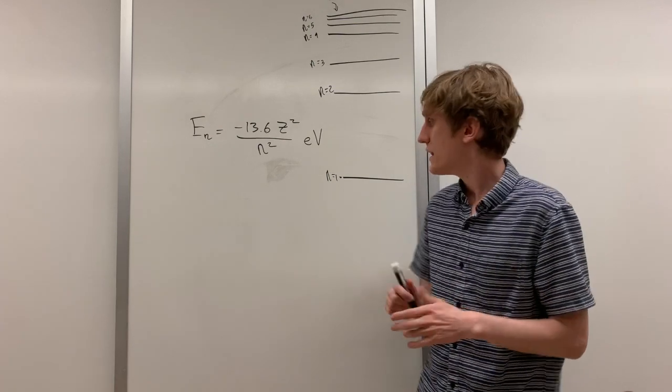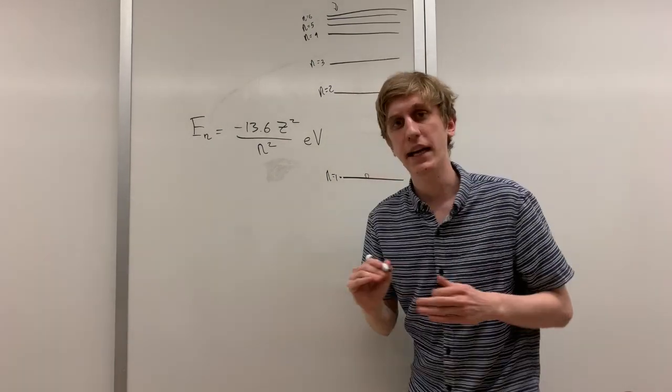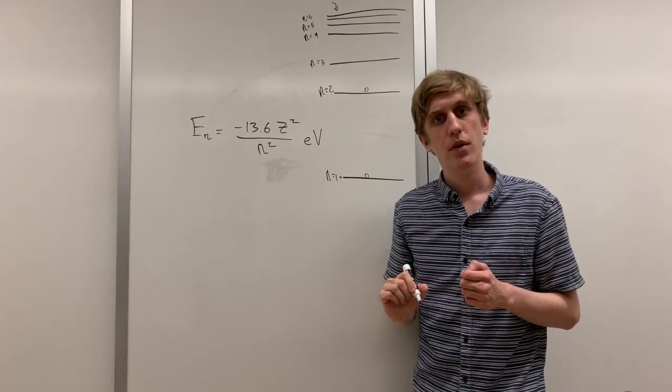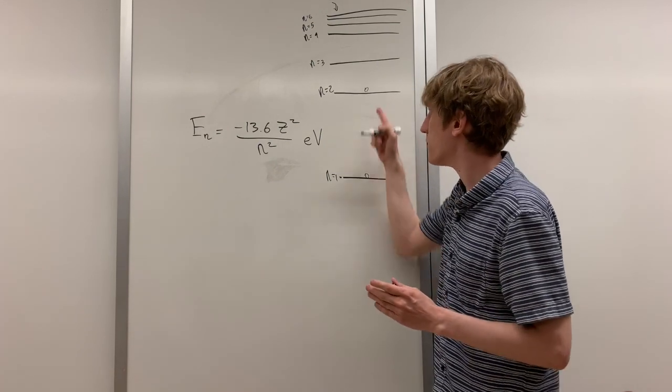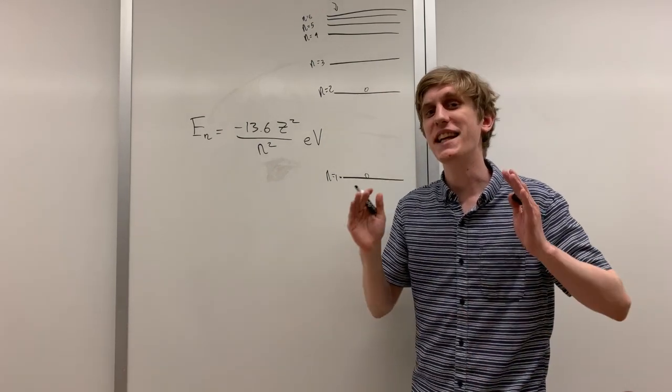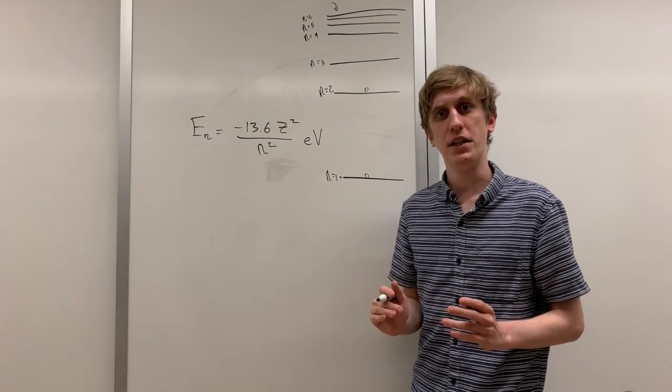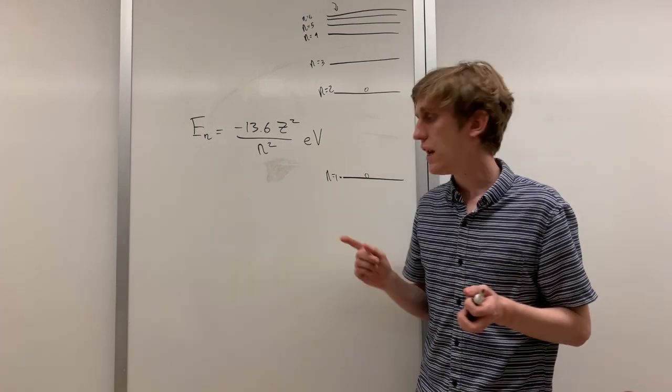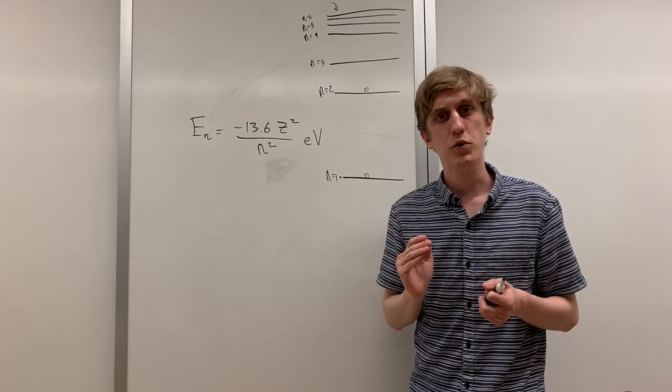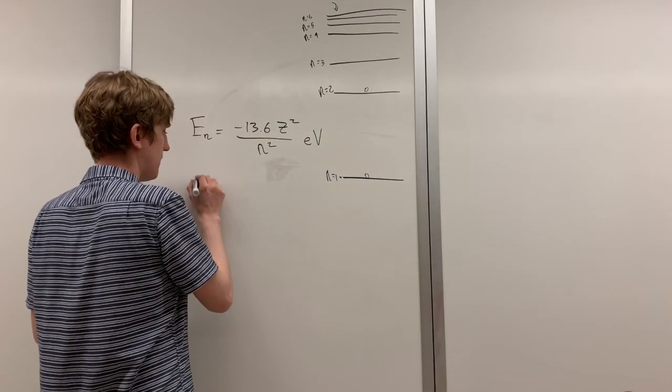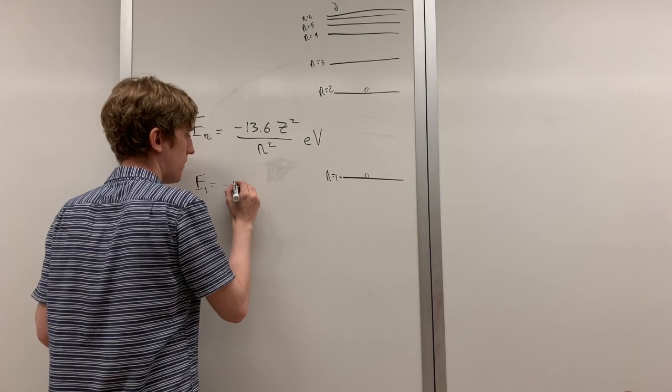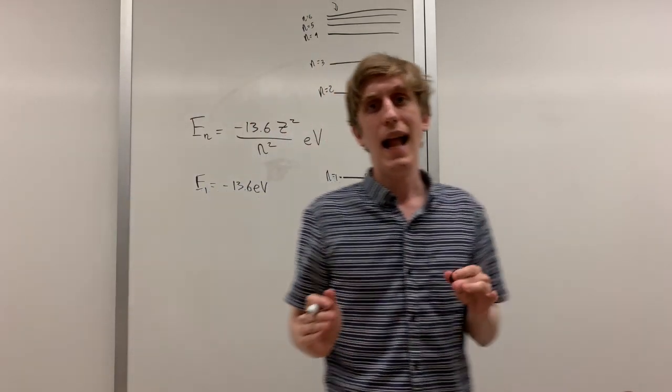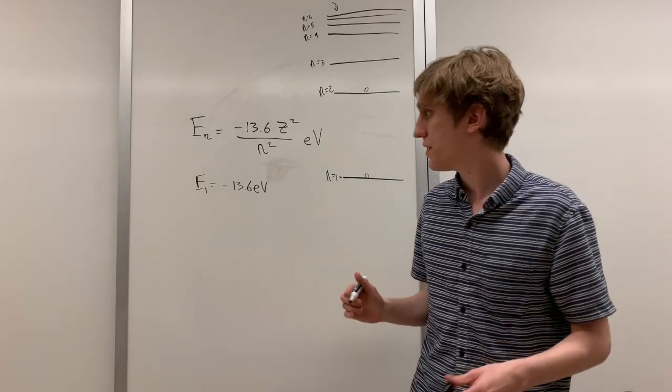For example, let's imagine that we have an electron sitting at N equals one, and we want to kick it up to N equals two. Let's calculate how much energy we need to get from here to here. That amount is just the difference in these energies. For simplicity, let's just assume that this is a hydrogen atom, and so there's a single proton. The energy level of the proton at N equals one is just this. And the energy level at N equals two is just this.